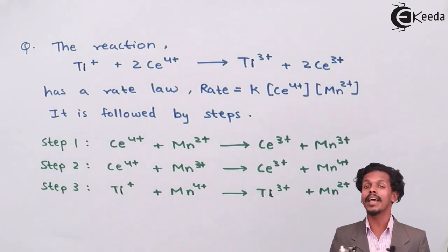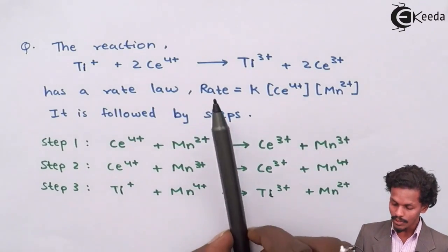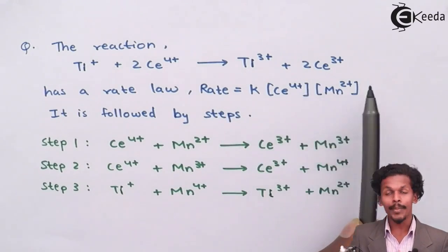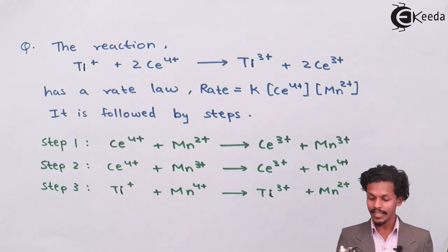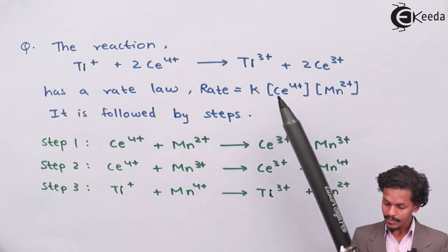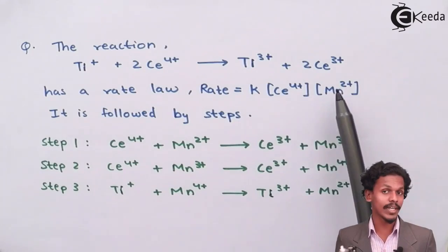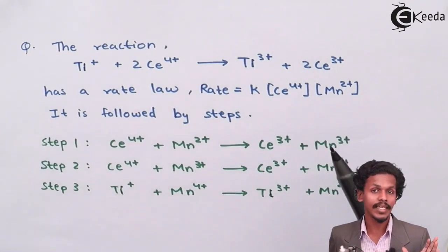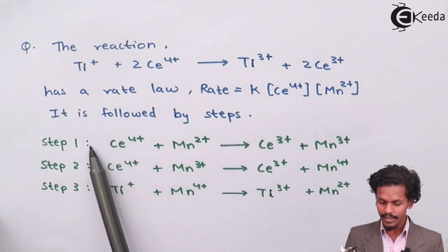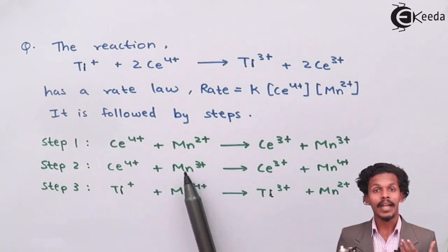To determine the rate determining step, we look at the rate law. The rate depends on Ce(4+) and Mn(2+). For an elementary reaction, we identify which step contains both these species as reactants. Ce(4+) and Mn(2+) appear together as reactants only in step one. In other steps, Ce(4+) appears with Mn(3+), not Mn(2+).